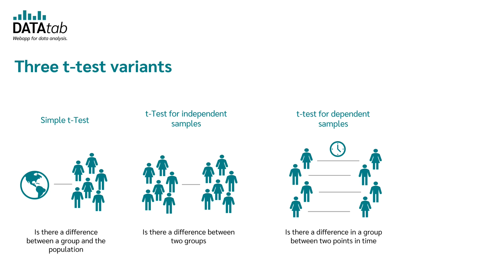The independent t-test is used to check whether there is a difference between two independent samples — for example, whether there is a difference between the salary of men and women. The t-test for dependent samples is used to test whether there is a difference between two dependent samples — for example, samples where a person was interviewed at two different times.